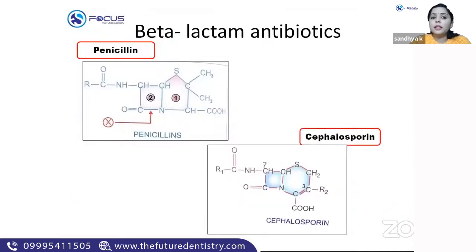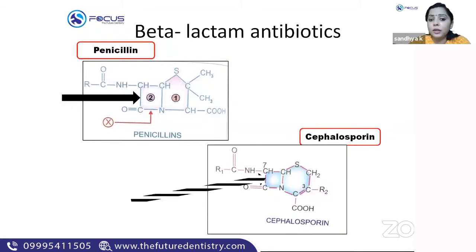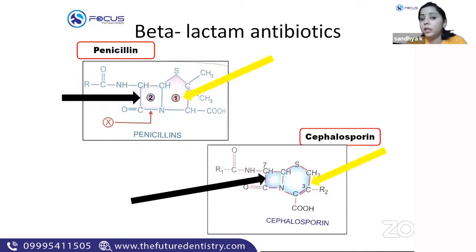Now, a closer look at beta-lactam antibiotics. Penicillin and cephalosporin are the main ones. They are called beta-lactam antibiotics because they contain a beta-lactam ring. The structure has two rings — one is the beta-lactam ring. Penicillin and cephalosporin have a similar structure and method of action.